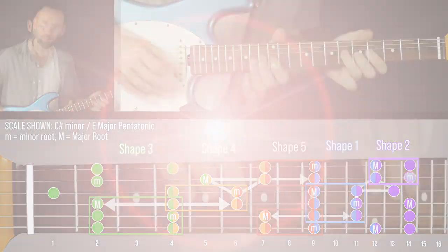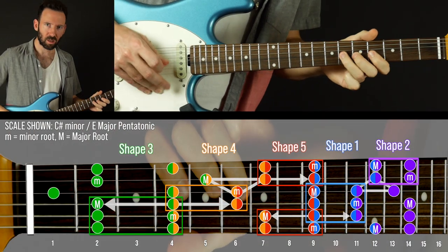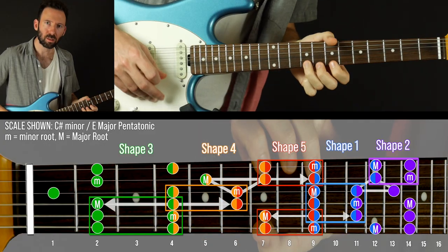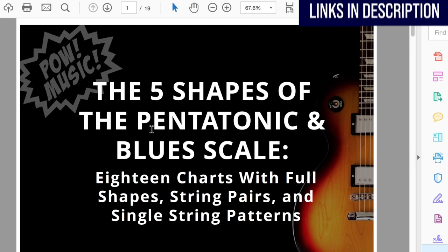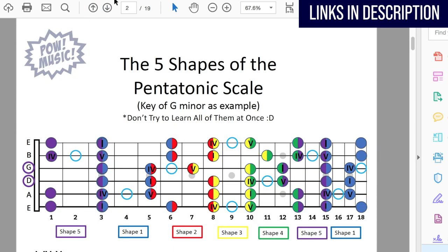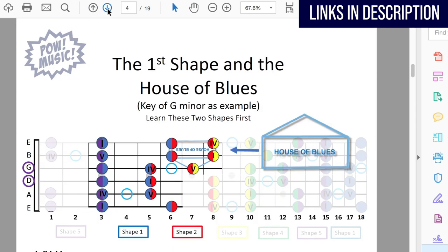In a moment I'm going to demonstrate how you might use this creatively in a solo, but first I want to let you know about some supporting resources I have for you linked in the description. So first you can download a free 18 page color PDF of the five shapes of the pentatonic scale and the order in which you should learn them.